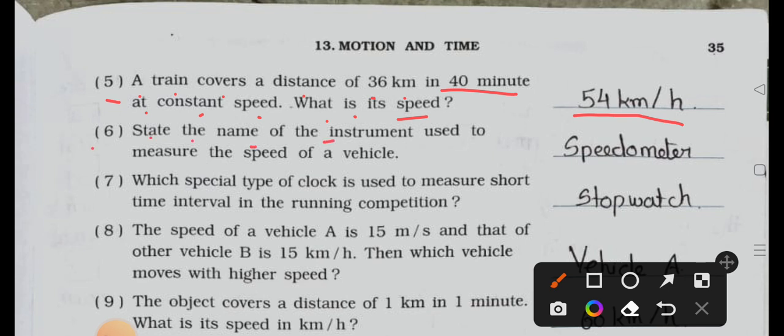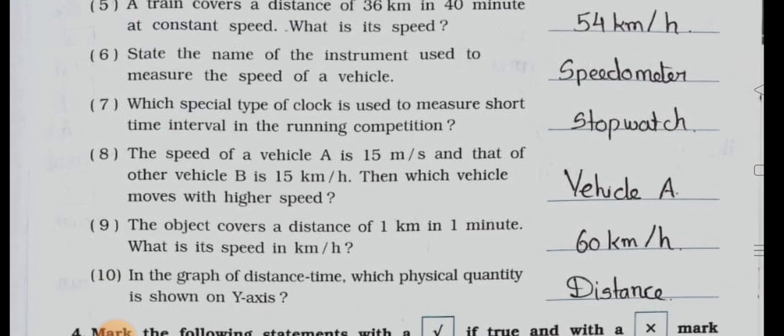Number six: state the name of the instrument used to measure the speed of a vehicle. Answer is speedometer. Number seven: which special type of clock is used to measure short time interval in the running competition? Answer is the stopwatch.